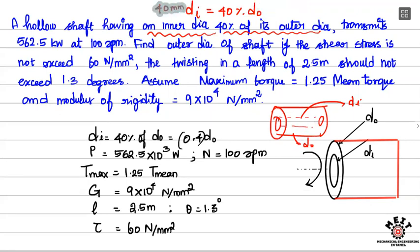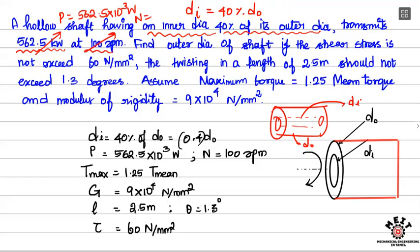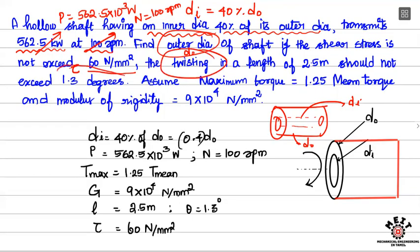The shaft transmits 562.5 kilowatt at 100 rpm, so the power P is 562.5 × 10³ watts and speed N is 100 rpm. Find the outer diameter D₀ of the shaft if shear stress does not exceed 60 N/mm², and the angle of twist over a length of 2.5 meters should not exceed 1.3 degrees.